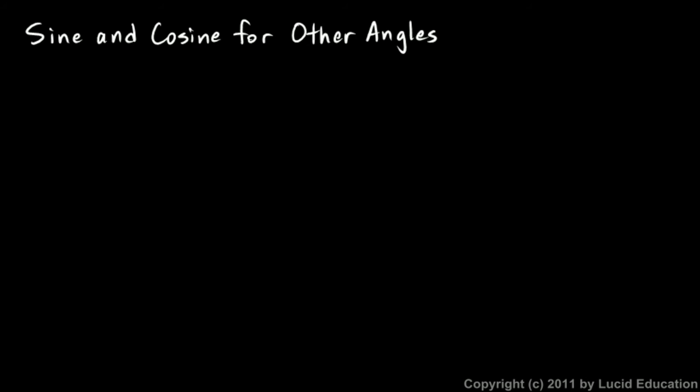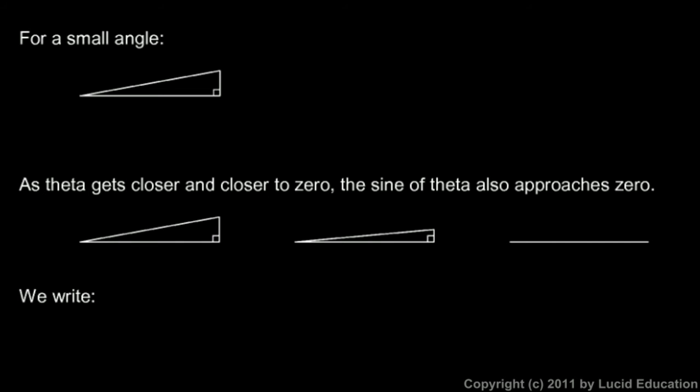We've looked at 30-degree angles and 45-degree angles and 60-degree angles, but obviously an angle could potentially have any measure, and in the real world, angles of all different sizes show up. It's not just 30 or 60 or 45-degree angles. So we're going to talk about sine and cosine for other angles, and I'm going to start off talking about the sine of a small angle. These ideas are not at all difficult, but simply follow my reasoning through these next few pages and you will understand the sine and cosine more deeply.